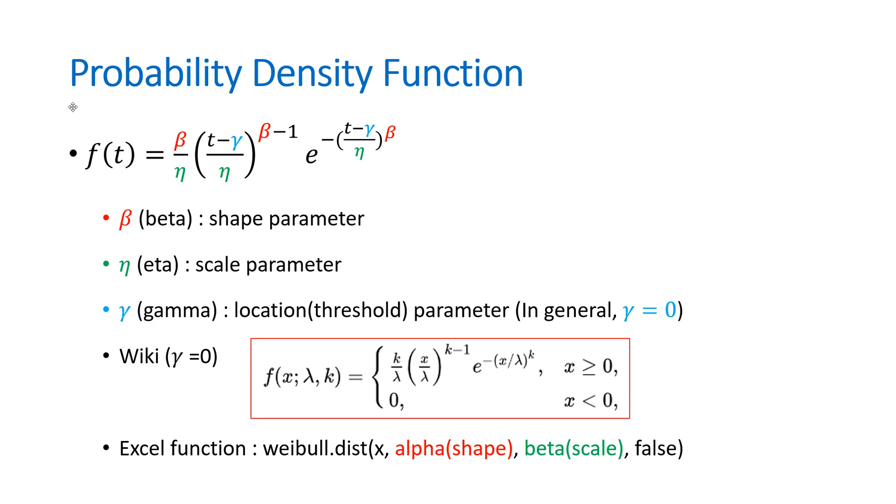This is probability density function for Weibull distribution. And again, beta is shape parameter and eta is scale parameter. Again, we can set gamma as zero. This is the formula in Wikipedia. And in Excel, we can use weibull.dist function. So, time variable and shape and scale parameter and false option.